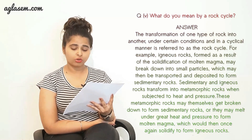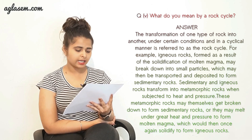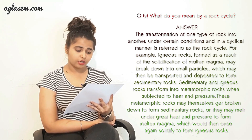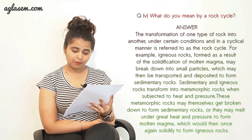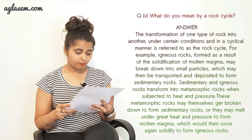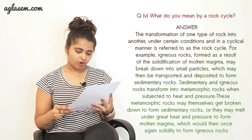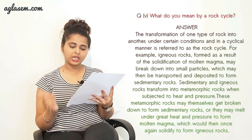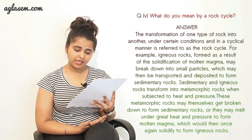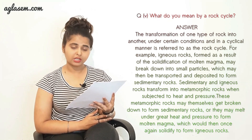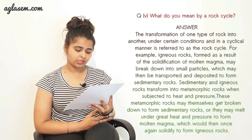Part five - What do you mean by a rock cycle? The transformation of one type of rock into another under certain conditions and in a cyclic manner is referred to as the rock cycle. For example, igneous rock formed from solidification of molten magma may break down into small particles, which may then be transported and deposited to form sedimentary rocks. Sedimentary and igneous rocks transform into metamorphic rocks when subject to heat and pressure. These metamorphic rocks may themselves break down to form sedimentary rocks, or melt under great heat and pressure to form molten magma, which would then solidify to form igneous rocks.